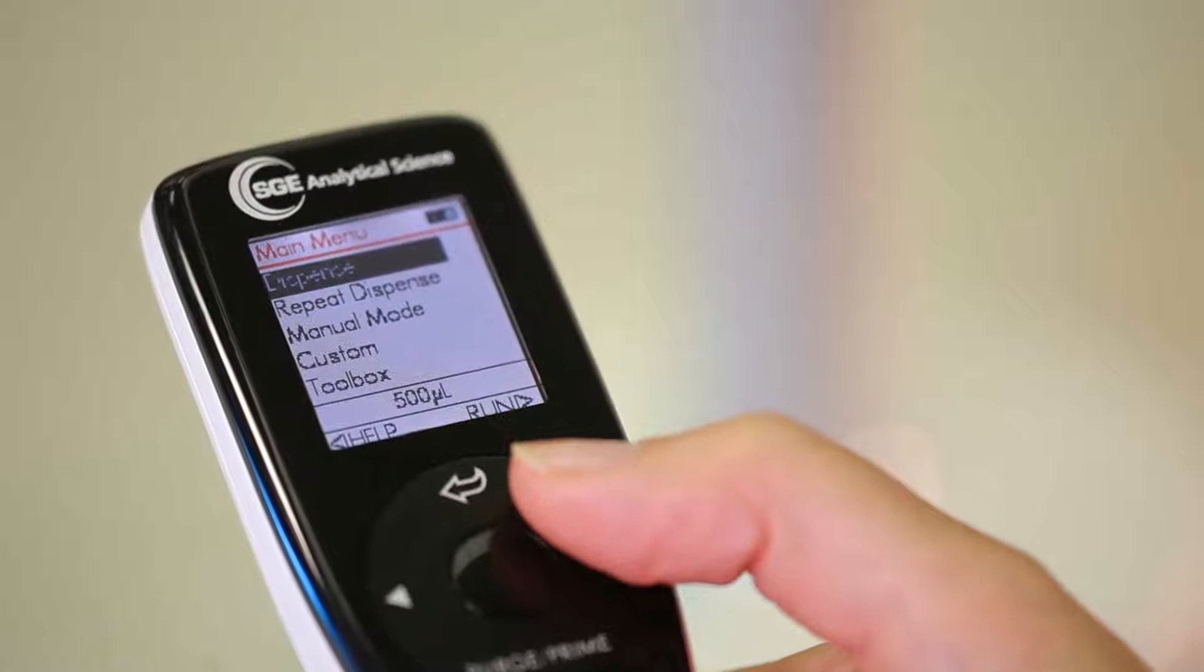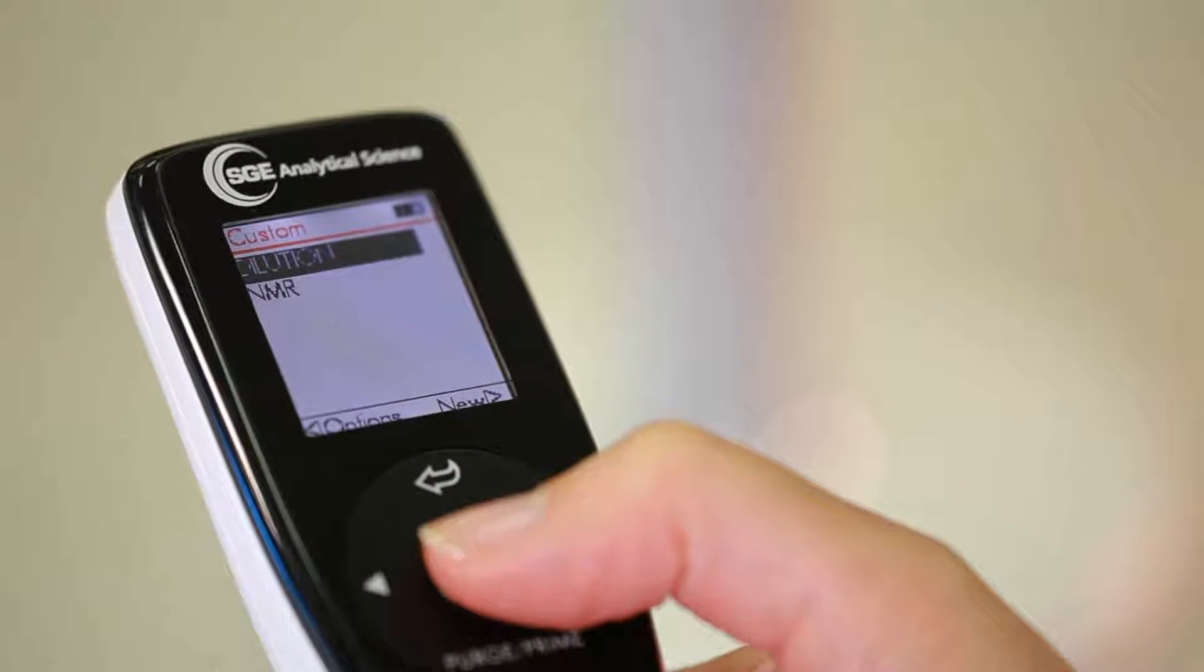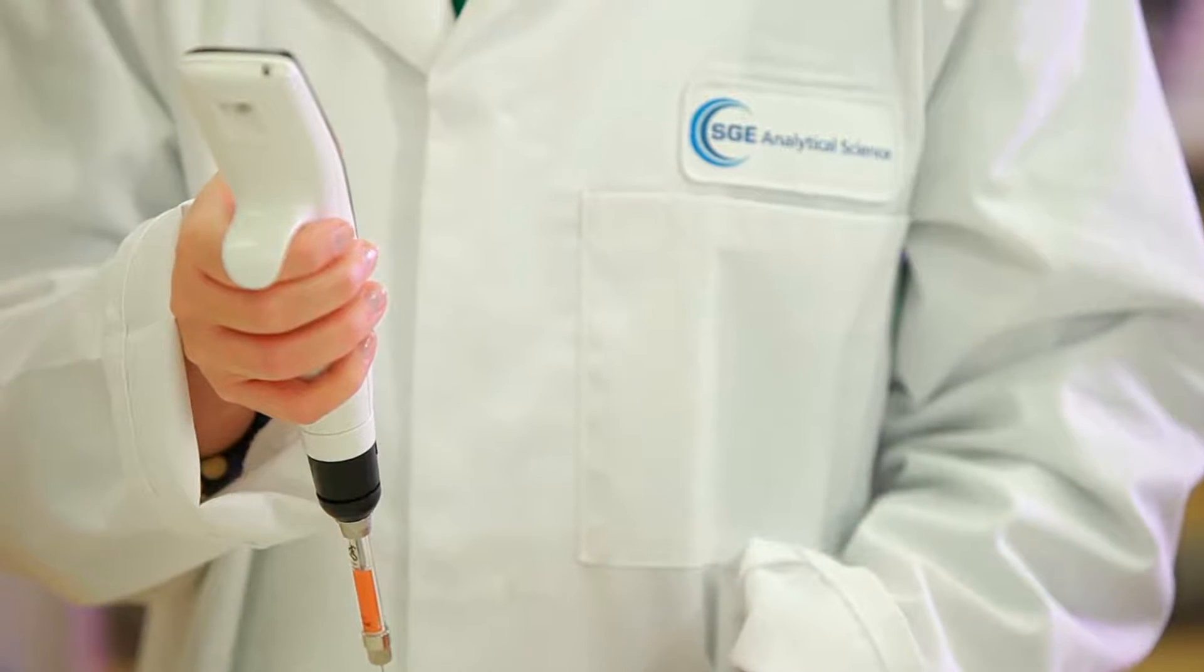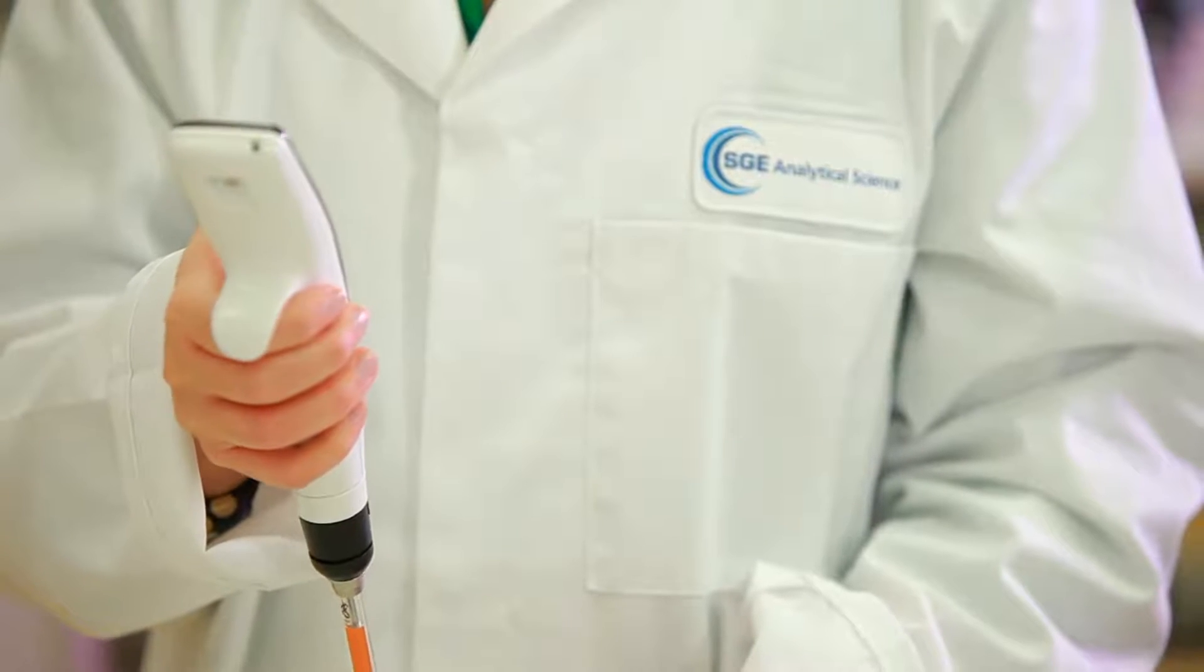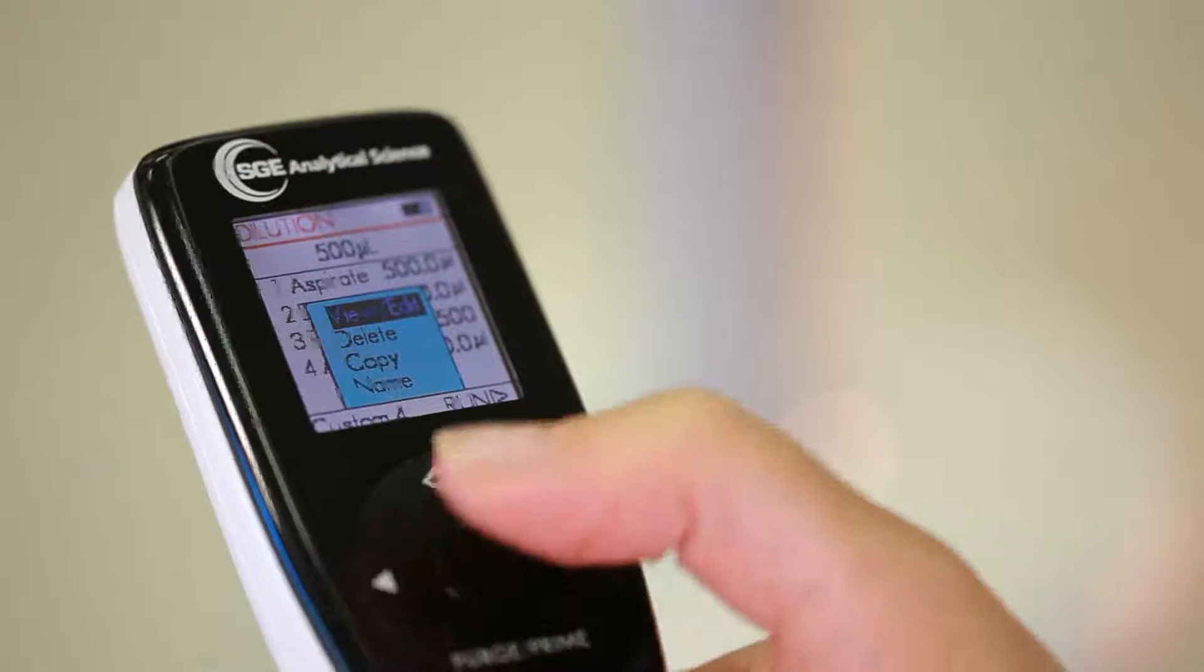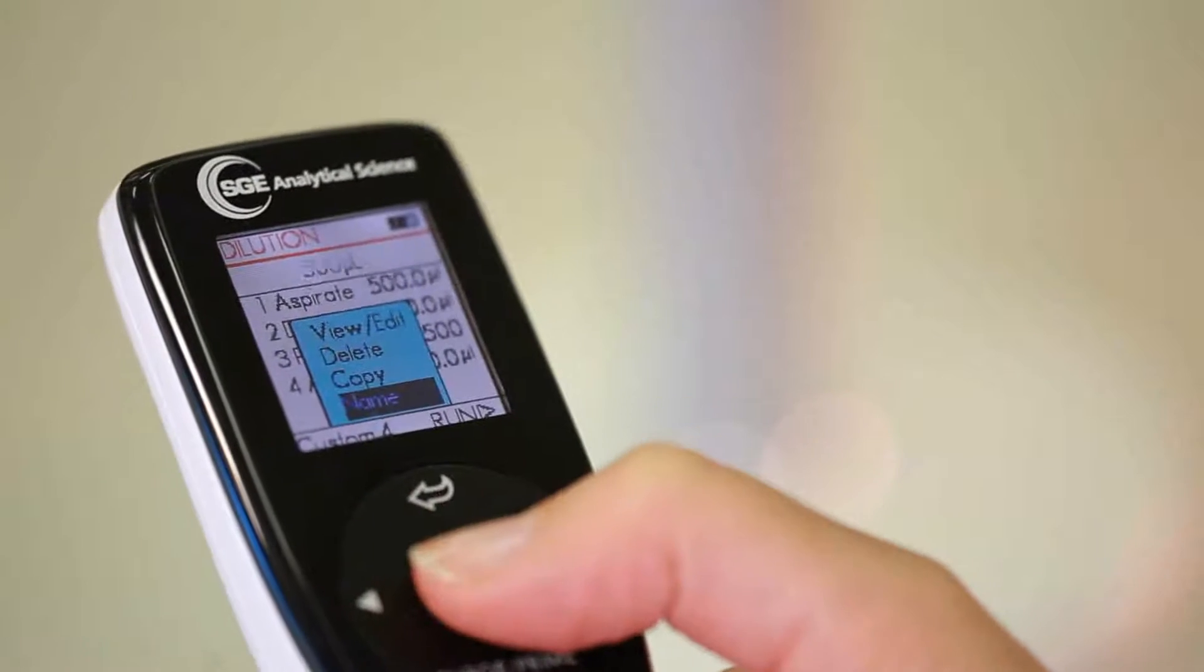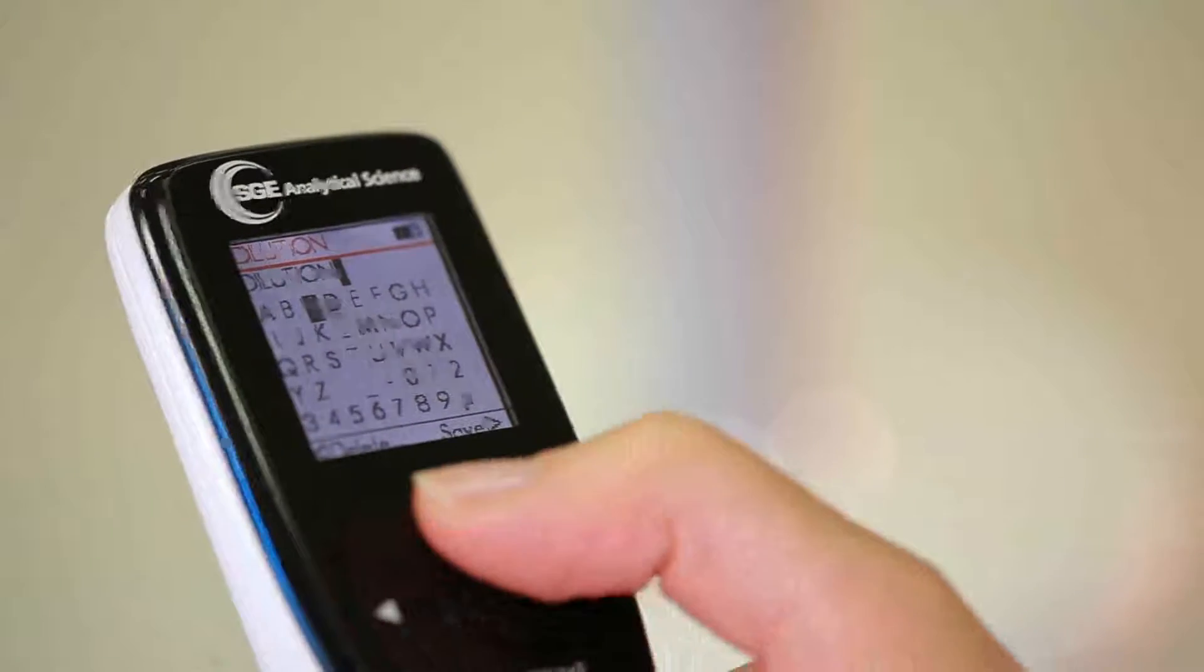To create and save a new custom program, just use the touch wheel to select the custom option from the main menu. Then, it's easy to follow the on-screen prompts to create programs uniquely suited to a variety of tasks. After the custom program is saved, users can name their program by selecting the name option for later identification.